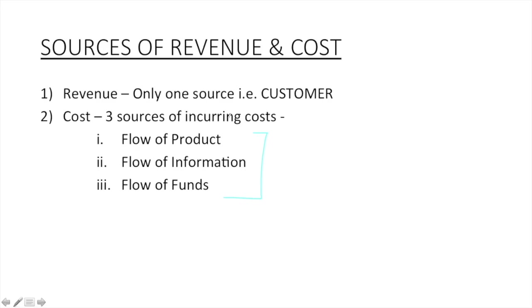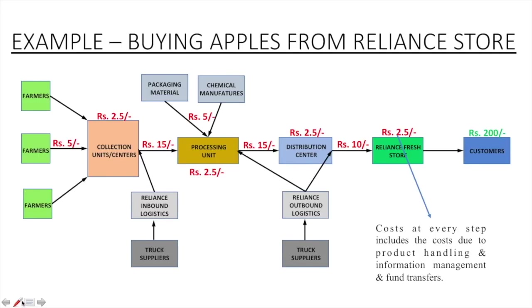Let's understand this from an example. Let's see what happens if a customer comes to a Reliance Fresh store to buy a kg of apple. The green color shows the overall revenue generated is 200 rupees, which is the price of one kg of apples. The red colored numbers show the costs at each and every step of the supply chain, including costs due to product handling, information management, and fund transfers. Starting from transporting the raw produce from farmers to the collection centers, there is an expenditure of 5 rupees in logistics, and then 2.5 rupees at the collection centers to store and process the apples.